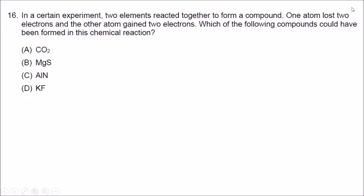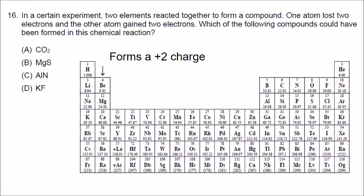Number sixteen: in an experiment, one atom lost two electrons and the other gained two electrons — which compound could have formed? Group 2 normally loses two electrons, forming a +2 charge, and group 16 normally gains two electrons, forming a -2 charge. One answer would be beryllium plus oxygen (BeO), but since that's not a choice, magnesium and sulfur are also in groups 2 and 16. So the correct answer is B.